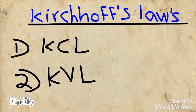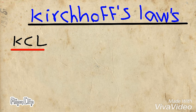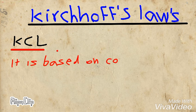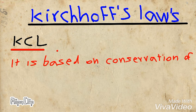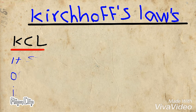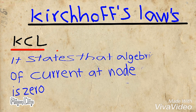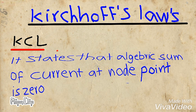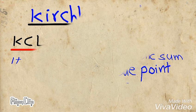First, we are going to discuss what is Kirchhoff's Current Law. It is based on electric charge properties, or the conservation of electric charges. It states that the algebraic sum of current at a node point is zero. A node is nothing but the intersection of two or more branch points.